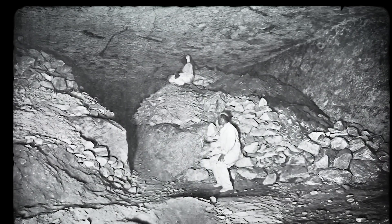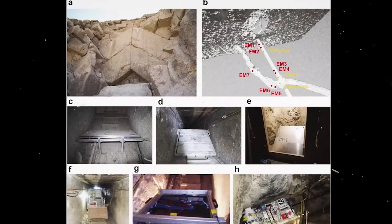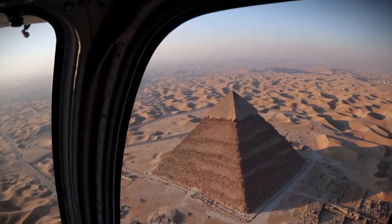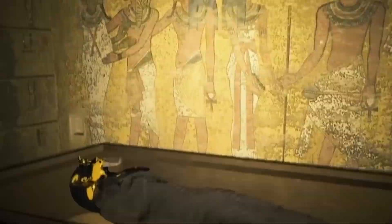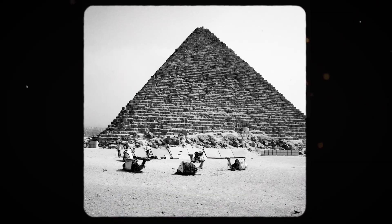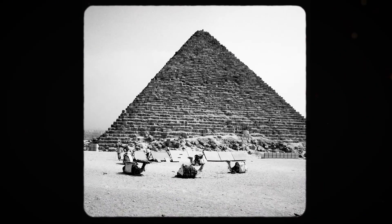One key point is that the ancient Egyptians were not a primitive society. They had a deep understanding of math, astronomy, and engineering. They were also highly organized, with a strong central government under the pharaoh. This allowed them to plan large projects and gather the labor force needed.